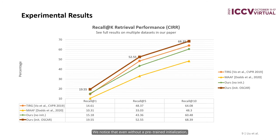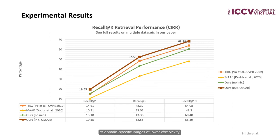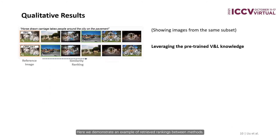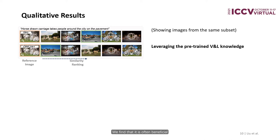We notice that even without pre-trained initialization, our method still performs on par with state-of-the-art methods. We find that the performance of certain state-of-the-art methods cannot be generalized to our dataset, hinting at the possibility that methods developed and tested on existing datasets may have been overly adapted to domain-specific images of low complexity. Here we demonstrate an example of retrieved rankings between methods. We find that it is often beneficial to leverage pre-trained vision and language knowledge, especially when encountering concepts that appear less frequently in the training data — in this case, pavement.